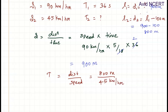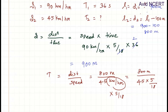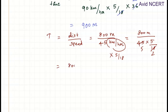This is in different units, so we convert to meters per second by multiplying by 5/18. So it is 800 meters divided by 45 times 5/18. Since 9 times 2 is 18 and 9 times 5 is 45, this simplifies to 800 times 2 divided by 5 times 5, which is 1600 divided by 25.